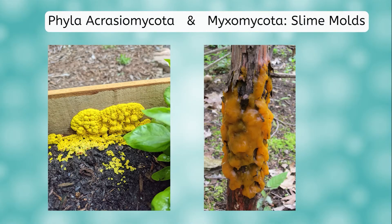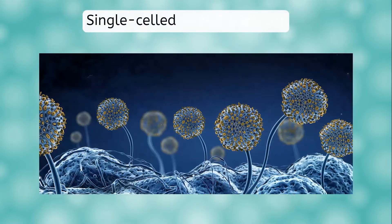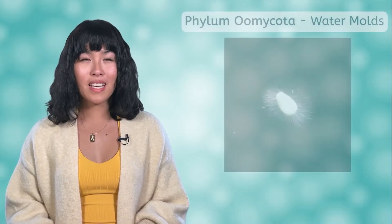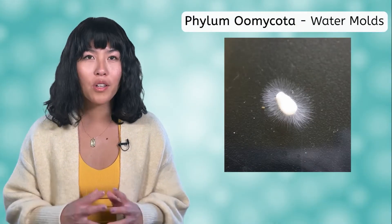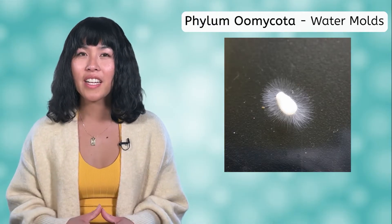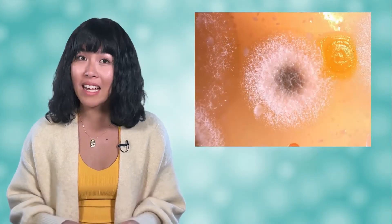The Acrasiomycota and Myxomycota phyla are slime molds. They tend to grow in damp soil or on plants, where nutrients are readily available. They live part of their life as single-celled organisms, then later aggregate to form colonies of thousands of cells, which act as one multicellular being. The other phylum of fungus-like protists is Oomycota, also called the water molds. As the name implies, many of these species live in water and can often be seen as a white fuzz growing on dead things.